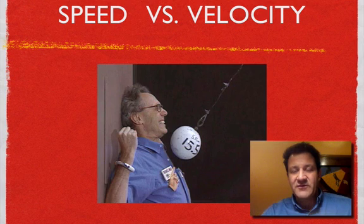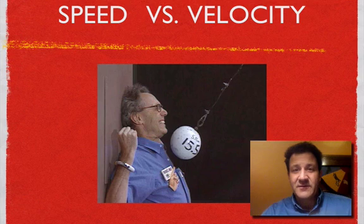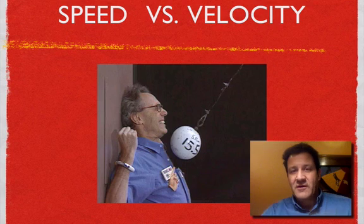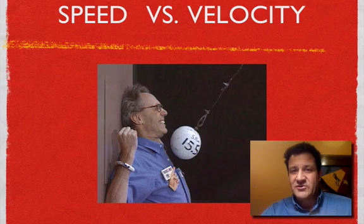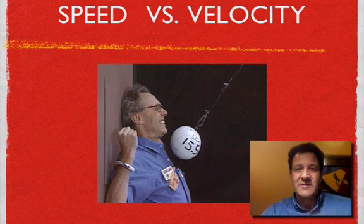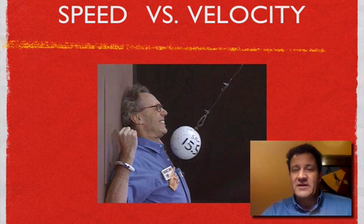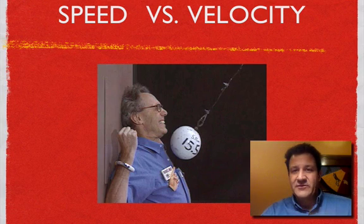We talked about scalars and vectors and what the difference is between a scalar and a vector. A scalar is something that's described by its magnitude only — for example, 5 kilometers or 3 meters per second. Those are scalars because they don't have a direction associated with them, just a magnitude. A vector, like velocity, is something that has a magnitude and a direction. So 3 meters per second to the west or 20 kilometers to the south — those are vectors because they have a magnitude and a direction.